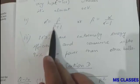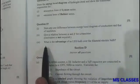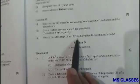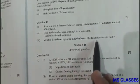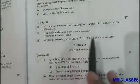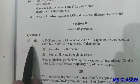So alpha, that is beta upon beta plus one, or beta you can write alpha upon alpha minus one. What is the advantage of an LED bulb over the filament electric bulb? LED bulbs are extremely energy efficient and consume up to 90 percent less power than the other bulbs.